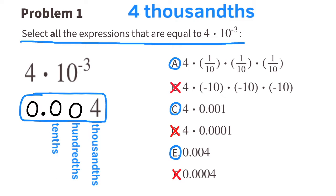And finally, it is equal to A, which would be 4 thousandths. Because one-tenth times one-tenth is one-hundredth, and one-hundredth times one-tenth is one-thousandths. And four times one-thousandths is four-thousandths.